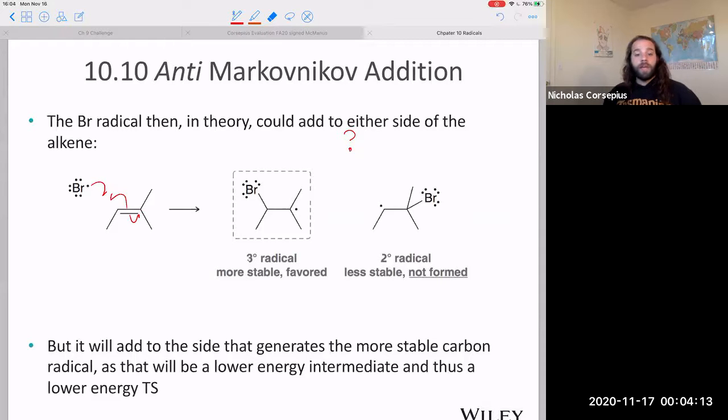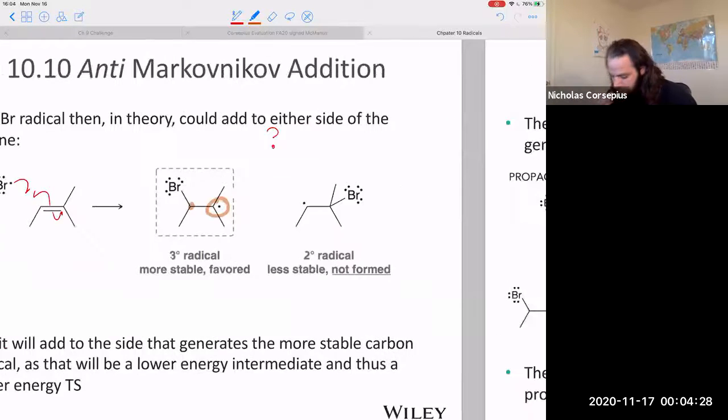And notice that this is how we have this anti-Markovnikov addition, because the radical formed on the more highly substituted carbon, bromine went onto the less highly substituted carbon.